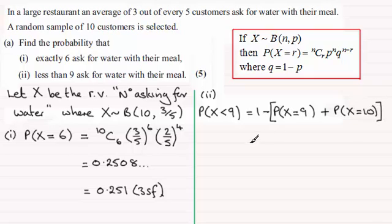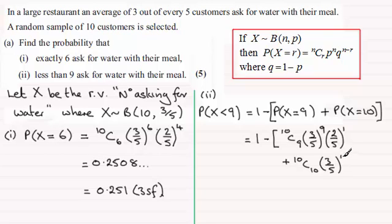So it's just a question of working these out. So we've got 1 minus, and for the probability of X equaling 9, it's going to be 10C9. Probability of success, that's 3 fifths to the power 9. And the probability of failure, 2 fifths, that's going to be to the power 1. And then to this, we've got to add, and I'll just come down here, probability X equals 10, which is going to be 10C10, 3 fifths to the power 10, and 2 fifths to the power 0.